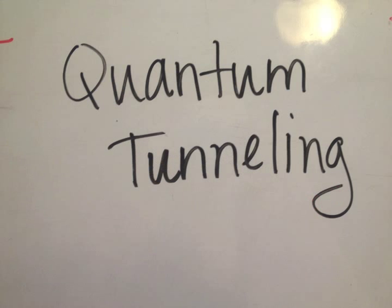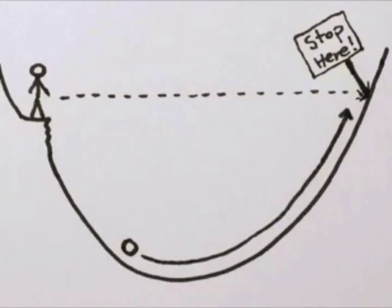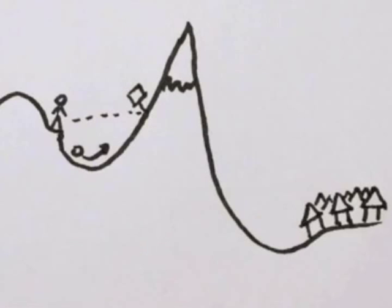Suppose you drop a ball down a hill. Classically, when the ball rolls up the hill on the other side, it can't go any higher than the height at which you dropped it, even if there is a nice big slope on the other side.